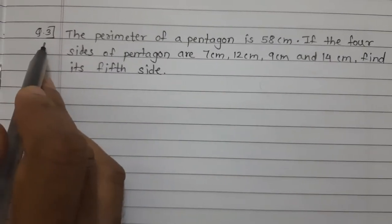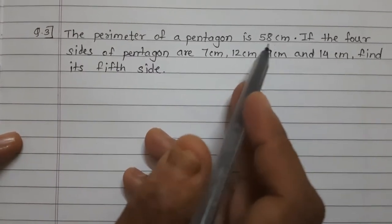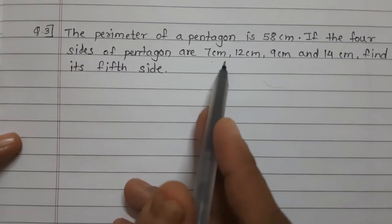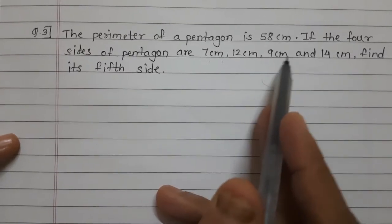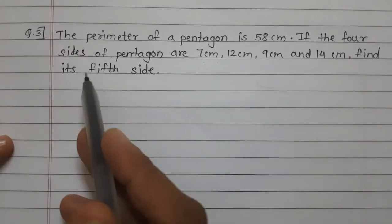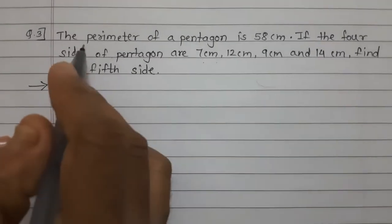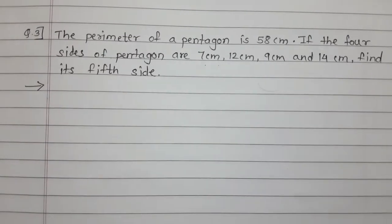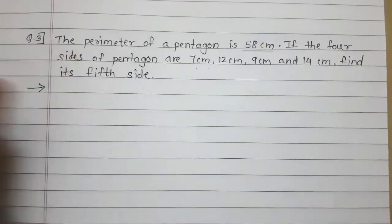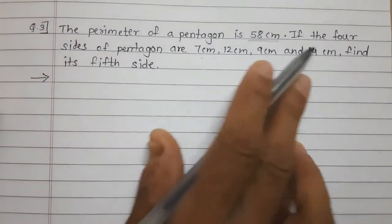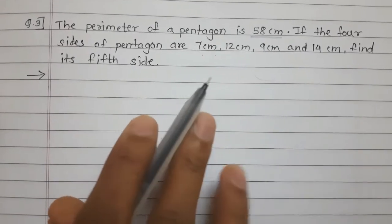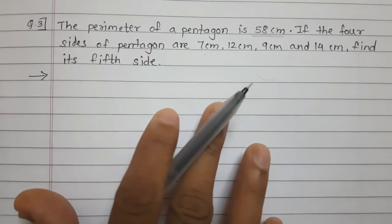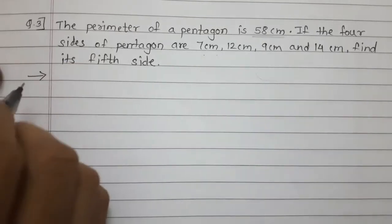Let's solve question number 3. The perimeter of a pentagon is 58 centimeter. Four sides of the pentagon are 7 cm, 12 cm, 9 cm, and 14 cm. Find its fifth side. What is given: perimeter of pentagon is 58 cm and four sides are given. Pentagon has 5 sides, so we have to find the fifth side.